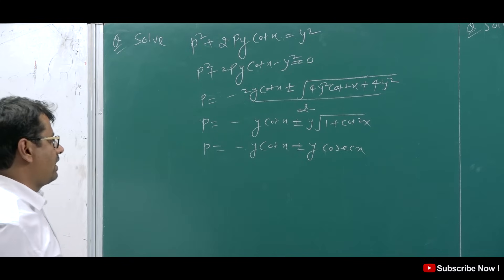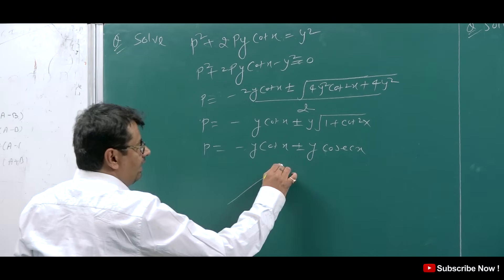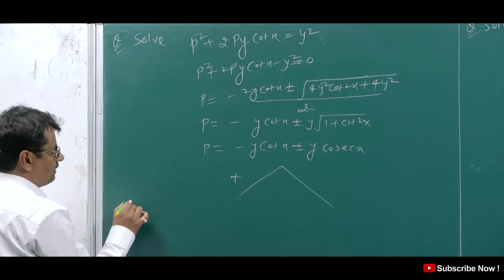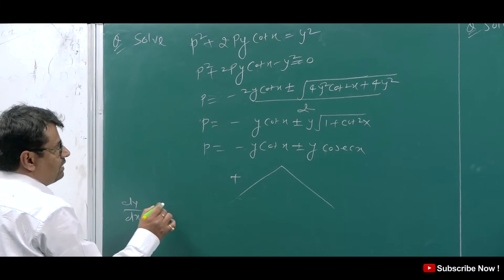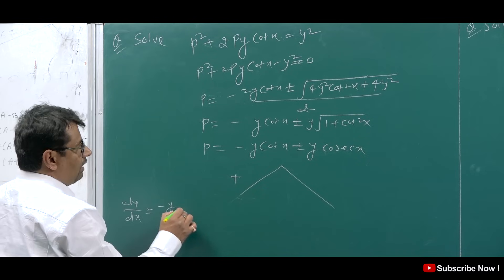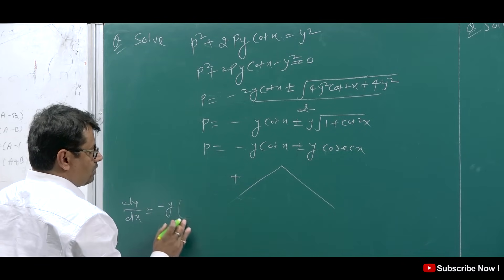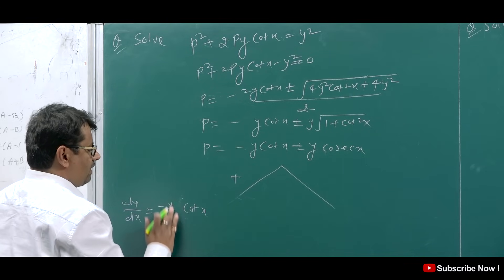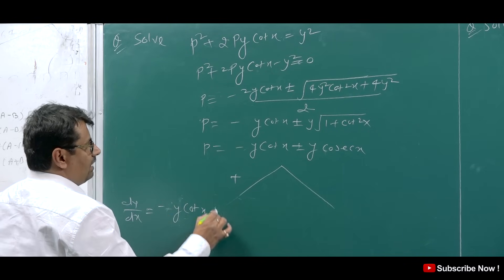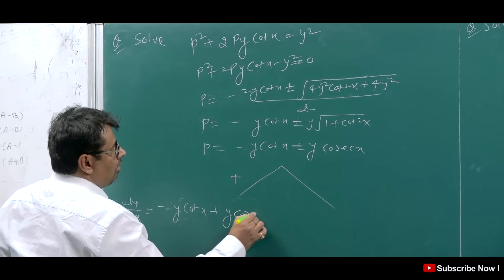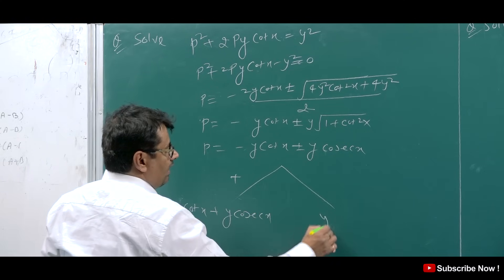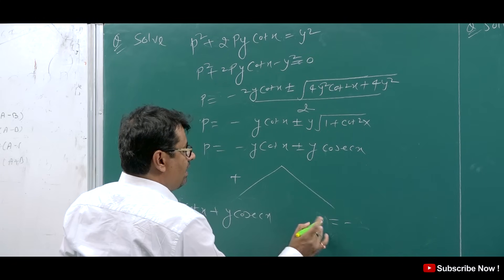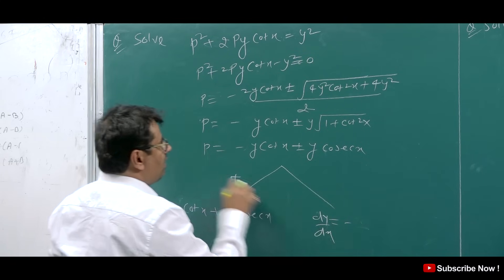Taking 4 common under the square root and simplifying, we get p = y·cot x ± y·√(1 + cot²x). Since 1 + cot²x = cosec²x, this becomes p = y(cot x ± cosec x).